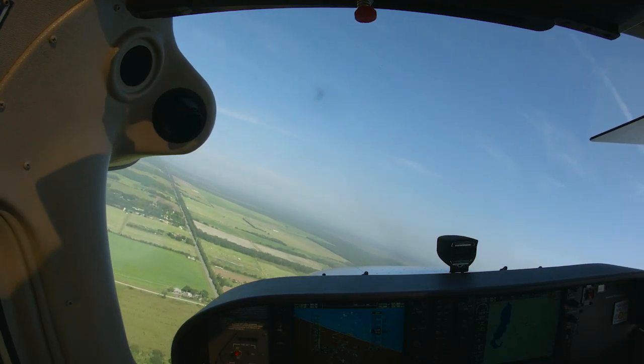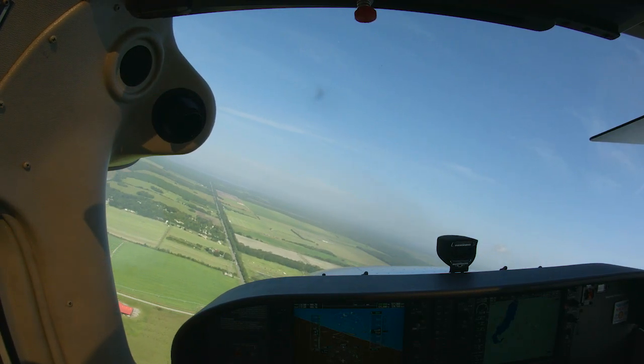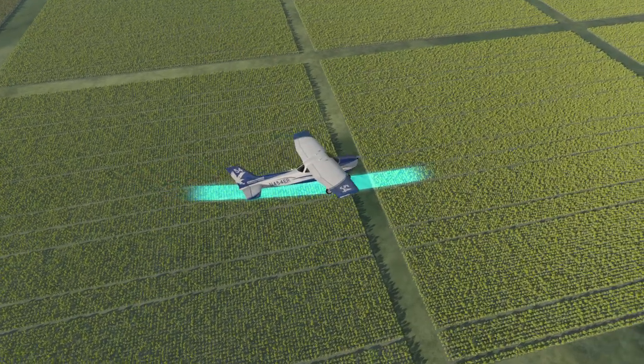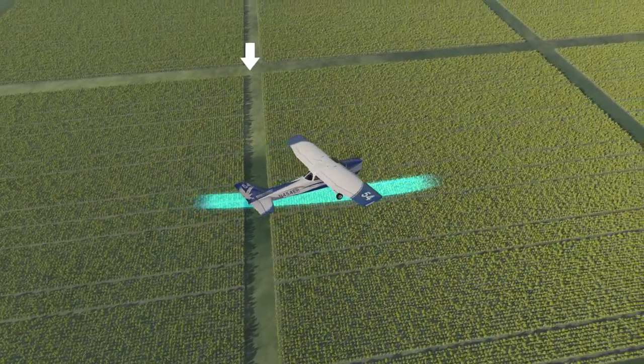Gradually decrease your bank angle to your shallowest bank as the ground speed decreases through the first half of the turn. Additionally, crab towards your reference to prevent you from drifting away from your point.